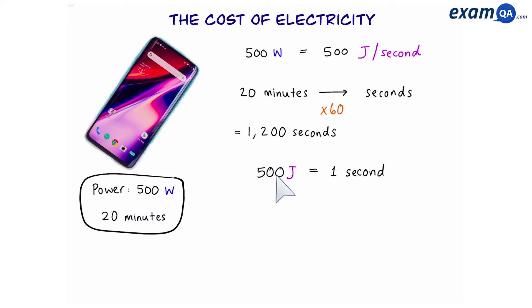So if the phone uses 500 joules per second, in 1200 seconds it will use 500 times 1200 which equals 600,000 joules. Now this number is quite big so we divide it by a thousand to turn it into kilojoules. So the answer for the phone is 600 kilojoules.